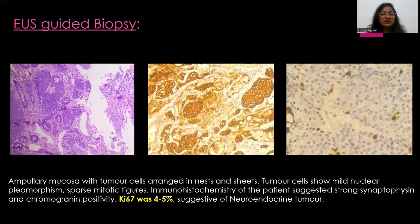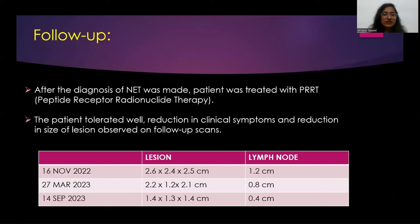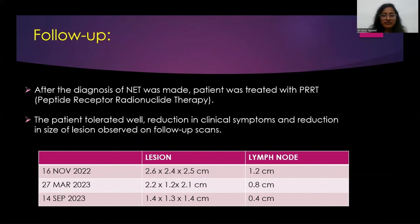EUS-guided biopsy confirmed the diagnosis of neuroendocrine tumor. The KI-67 index was approximately 4 to 5%, indicating a moderately differentiated NET. After diagnosis, the patient was given PRRT — peptide receptor radionuclide therapy — and responded well to treatment. Follow-up scans showed reduction in clinical symptoms as well as reduction in the size of the lesion and lymph nodes.